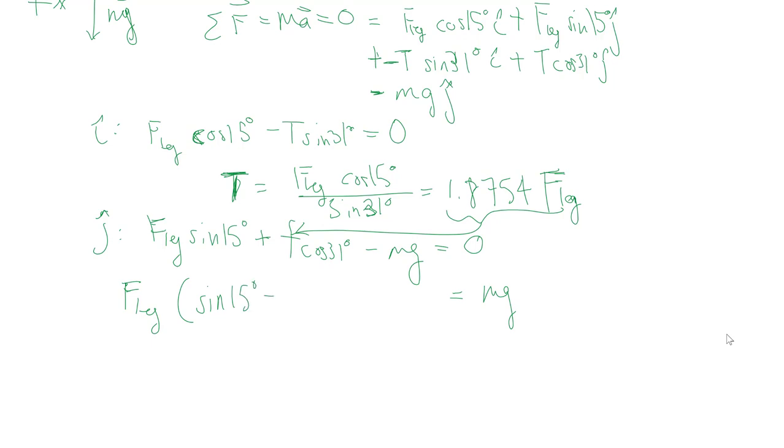We're left with sine 15 degrees plus all the rest of it and then we take this chunk and we divide over and we'll be able to get the magnitude of my leg force where m of course is the mass of the entire person 52 kilograms. g is our usual 9.81 meters per second squared.